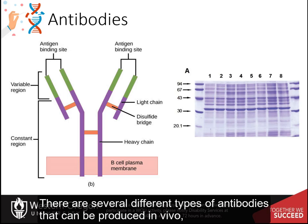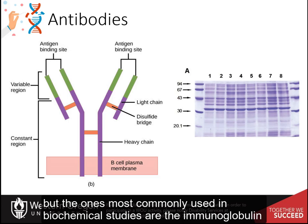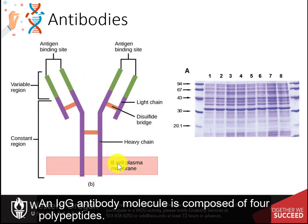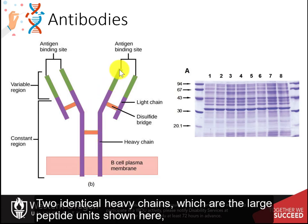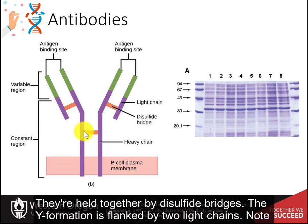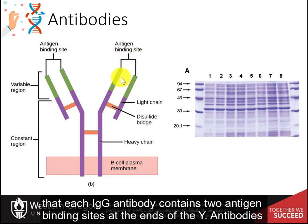There are several different types of antibodies that can be produced in vivo, but the ones most commonly used in biochemical studies are the immunoglobulin type G antibodies, or IgG. An IgG antibody molecule is composed of four polypeptides: two identical heavy chains, which are the large peptide units, that are partially bound to one another in a Y formation held together by disulfide bridges. The Y formation is flanked by two light chains. Note that each IgG antibody contains two antigen binding sites at the ends of the Y.